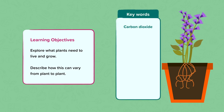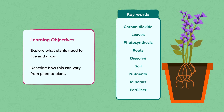The key words we need to look out for include carbon dioxide, leaves, photosynthesis, roots, dissolve, soil, nutrients, minerals and fertilizer.